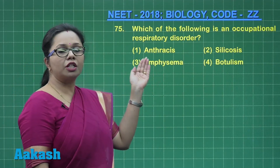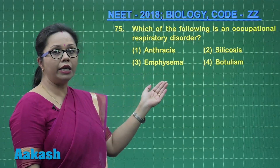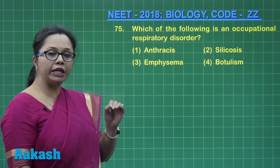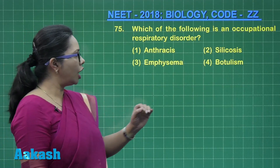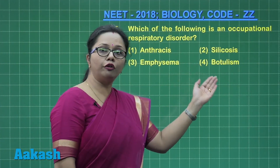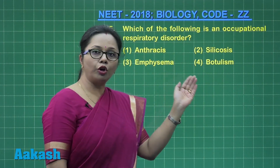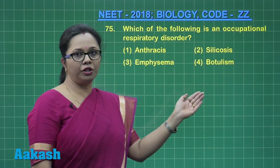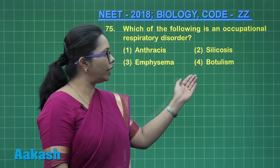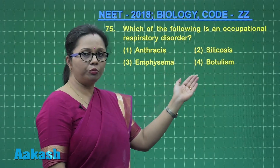Emphysema is a smoker's disease in which the alveolar lining is damaged, leading to a decrease in the respiratory surface area. Botulism is a kind of food poisoning caused by Clostridium botulinum, a bacteria, and results in respiratory failure, but it is not occupational.